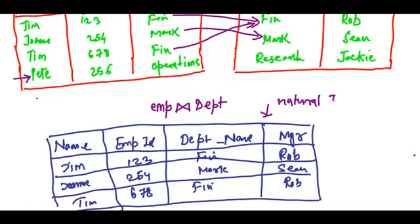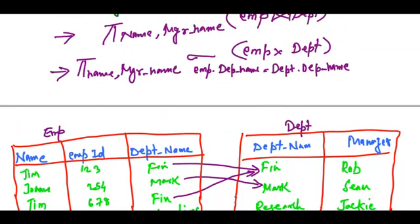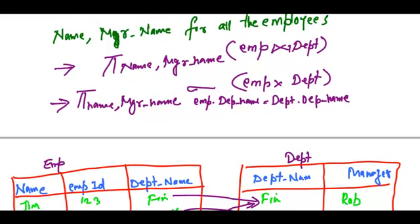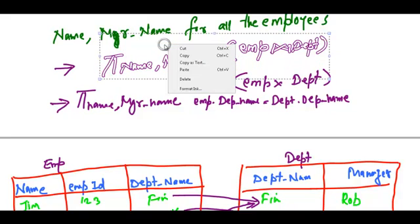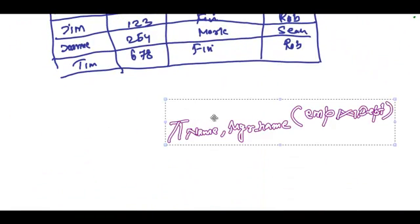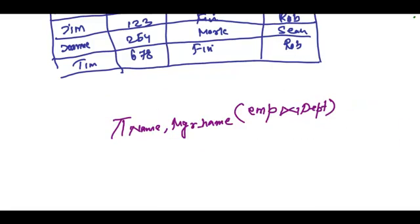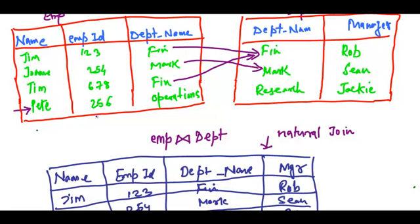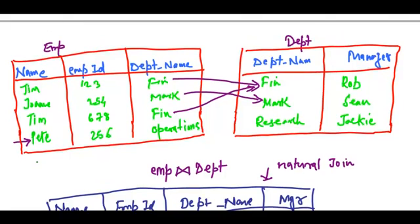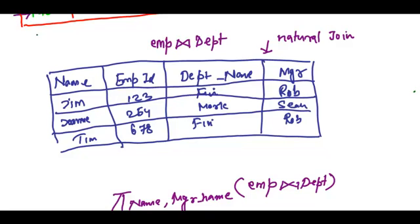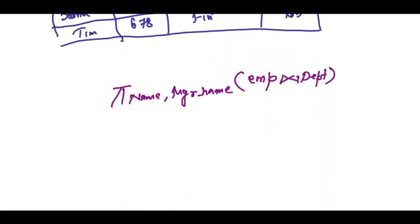If I make the above query where I need to find all the names and the names of the manager in which a particular employee works, say I execute this query, then I won't get the information regarding Pete despite the fact that I myself had stated that I wanted the information regarding all the employees. So what do I do in this case? In this case, we use a concept called...